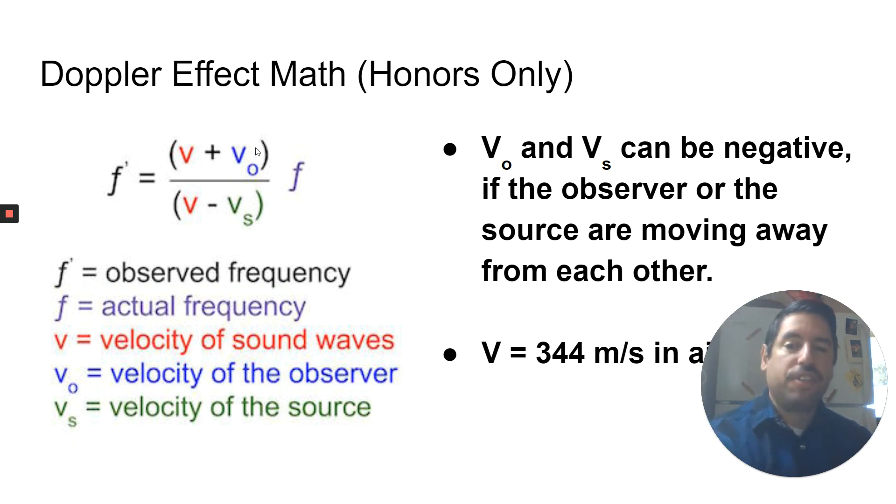V O is the velocity of the observer. So this is how fast the observer is moving. And V S is the velocity of the source. So it's measuring how fast the source of the sound is moving. So be careful to note that V O and V S can be negative if the observer or the source are moving away.